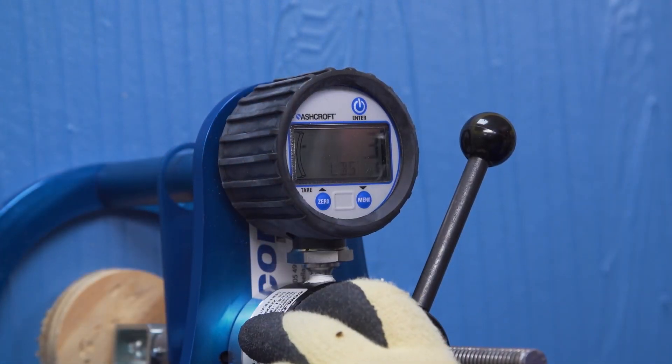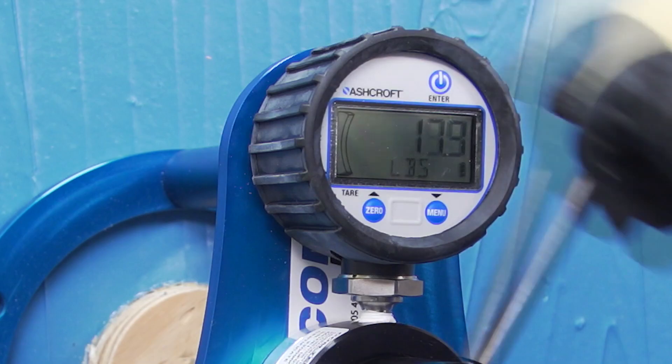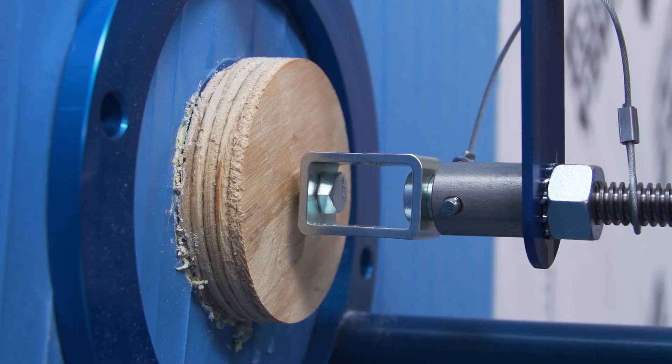Next, attach the pull tester to the puck, taking care not to apply stress to the test puck. Now begin slowly cranking the pull test handle, gradually increasing the puck load in as smooth and continuous a manner as possible.